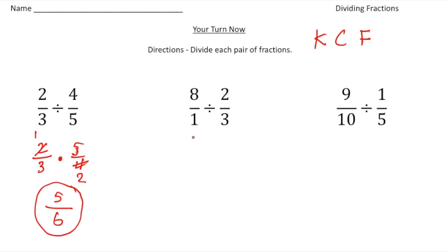Next one. We have 8 divided by 2 thirds. So again, keep the first fraction. Change to the division and multiplication. And then flip the second fraction. So it's going to be 3 over 2. And now we can cross reduce if it's possible. And we can. So that's going to be a 4 and that's going to be a 1. And now we multiply. 4 times 3 is 12. Over 1 times 1 is 1. So our answer is 12.